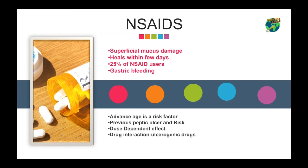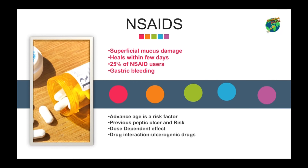NSAID ulcer and GI complication risks are increased with use of multiple NSAIDs or concomitant use of low-dose aspirin, oral bisphosphonates, corticosteroids, anticoagulants, antiplatelet drugs and selective serotonin reuptake inhibitors. The risk of gastrointestinal bleeding increases two-fold with corticosteroids combined with NSAIDs. Similarly, the risk increases 20-fold when NSAIDs are taken with warfarin, and up to six-fold when used concomitantly with serotonin reuptake inhibitors.